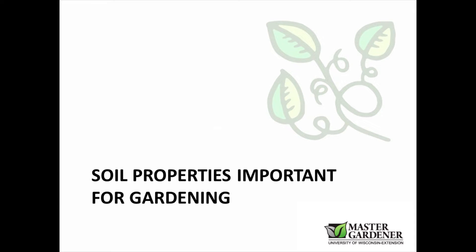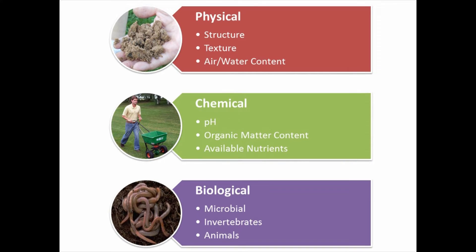Let's talk about those properties that make up the 700 different types of soil and that are important for gardening. We break those properties down into three categories: physical properties, chemical properties, and biological properties. Physical properties include the soil structure, the texture of the soil, and the amount of air and water — the pore spaces in the soil.